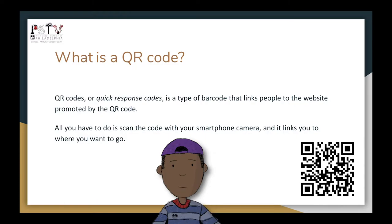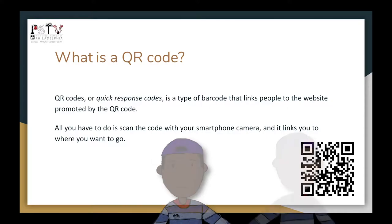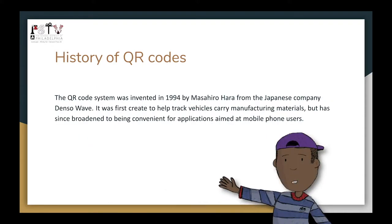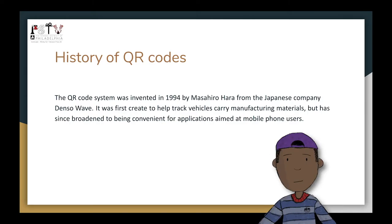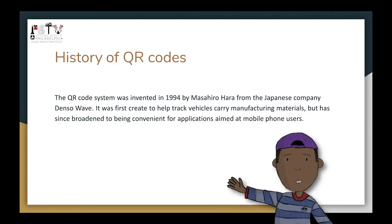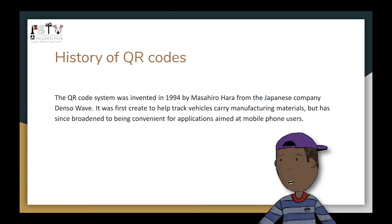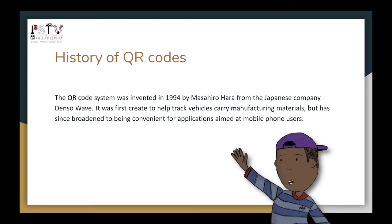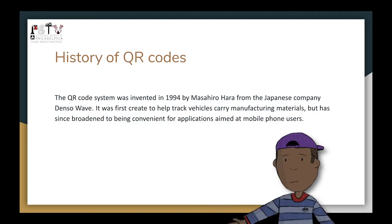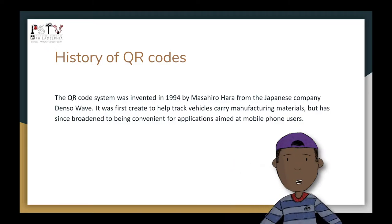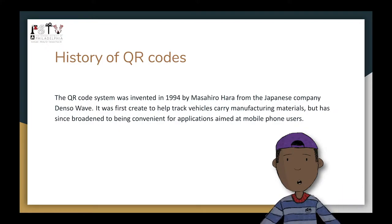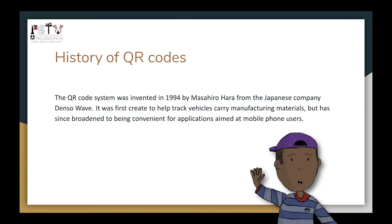QR codes haven't always been used to get people to online resources from their mobile phone. Originally it started off as a tool to help track vehicles in the manufacturing industry. In 1994, a man named Masahiro Hada from a Japanese company Denso Wave created it so that different shipments could be tracked a little bit easier, but now it's been broadened so that a lot of these QR codes are aimed at mobile phone users.